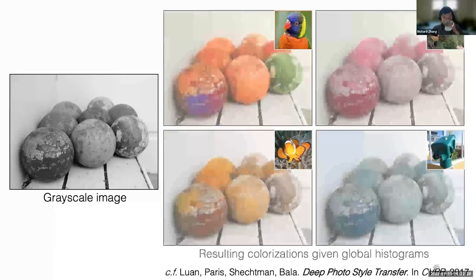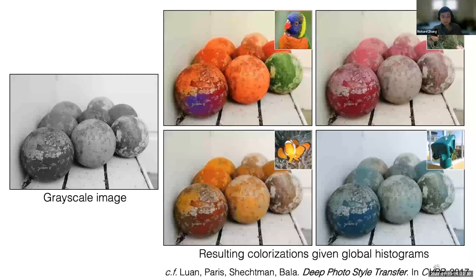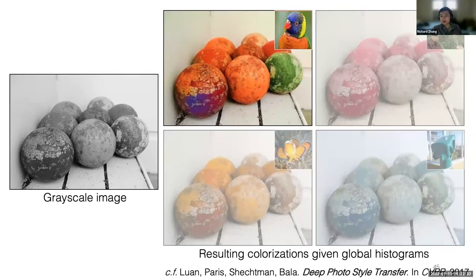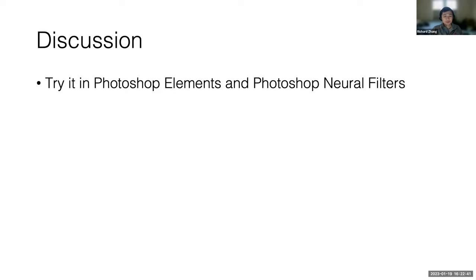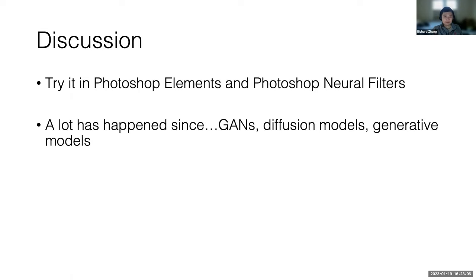Here are these interesting colored balls. I like this one where we take the color of the lorikeet and put on these big gray balls here. This was back in 2016, 2017. Obviously, a lot has happened. I was doing this work back at Berkeley. Since I joined Adobe, this is something I was able to engage with product teams about and now you can actually try it. If you get Photoshop Elements, Photoshop Neural Filters, you can actually try our system in there as well.